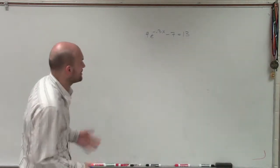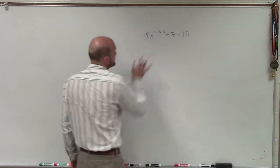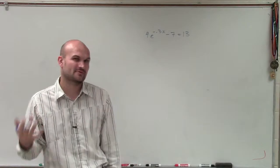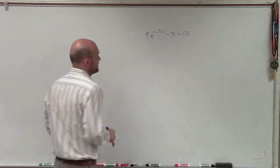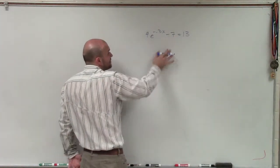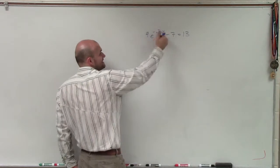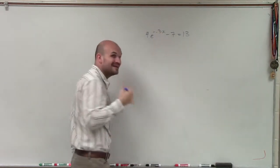So to do a problem like this, what I'm going to do is I need to isolate this e raised to a negative 0.3x. And to do that, I'm going to have to undo all my operations that's being multiplied by this e raised to this power of the variable that I need to find.